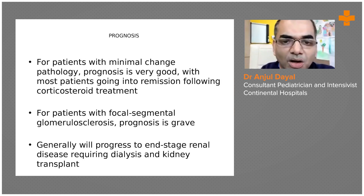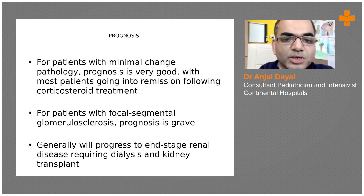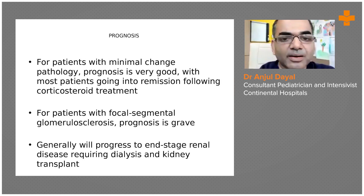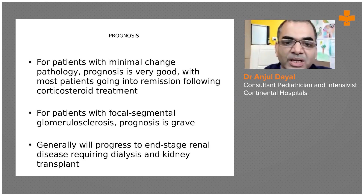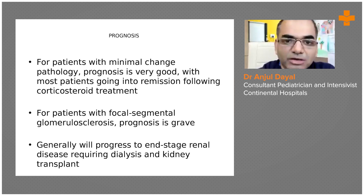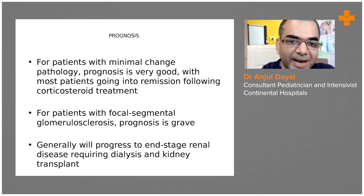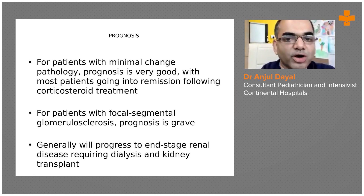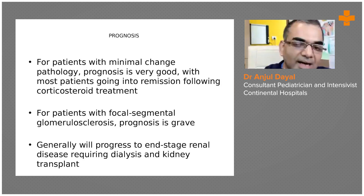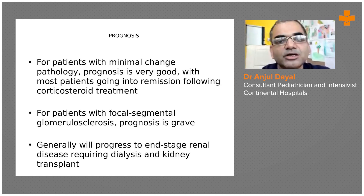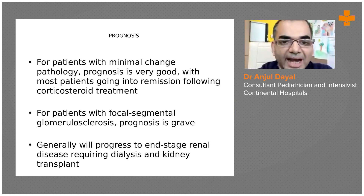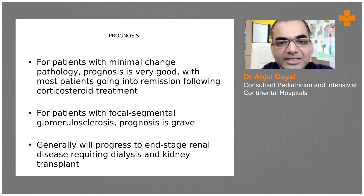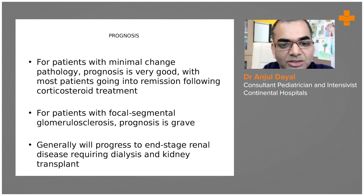The prognosis for FSGS — focal segmental glomerulosclerosis — membranoproliferative glomerulosclerosis, membranous glomerulosclerosis, or secondary nephrotic syndrome is not so good. These children are either steroid dependent or steroid resistant, require other medications, and have a risk of developing end-stage renal disease, possibly requiring dialysis or kidney transplant.